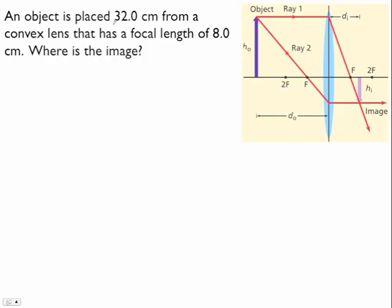So let's try the thin lens equation. This problem says an object is placed 32 centimeters from a convex lens that has a focal length of 8 centimeters. So that's our f. Where is the image? So that's our di. This is our object distance because this is how far the object is.